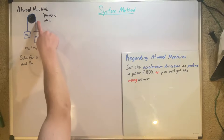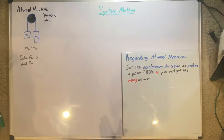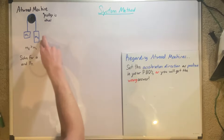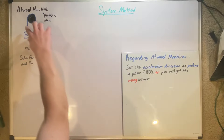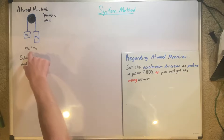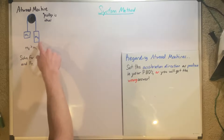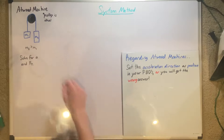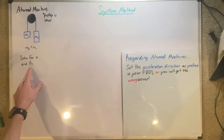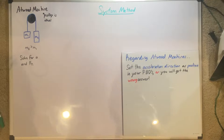Here we are given an Atwood machine, also just known as a pulley, where we have a mass 1 on the left side and a mass 2 on the right side, connected by the same string that goes around the pulley, where mass 2 is greater than mass 1. It asks us to solve for A — acceleration — and the force of tension.